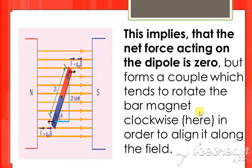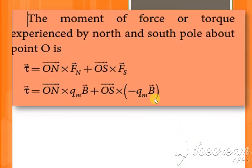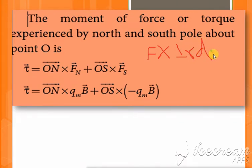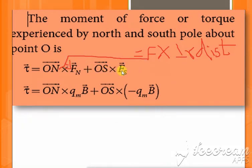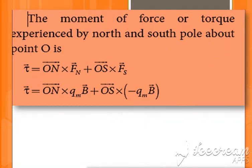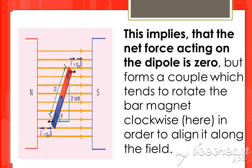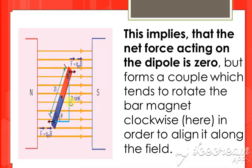Because of that couple, the magnet tends to rotate in the clockwise direction — it moves this way — and that forms your torque. Since the net force is zero, there is a couple, and because of that couple there is a clockwise movement of the magnet. Next is the moment of a force, which is one of the forces multiplied by the perpendicular distance. Let's see this with a diagram for a clear view of what the perpendicular distance is.